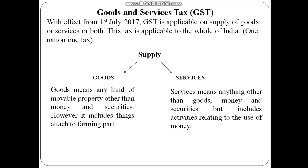Services means anything other than goods — things beyond goods. It does not include money and securities, but it includes activities relating to the use of money, like the profession of a teacher, doctor, or advocate, supply of electricity, water supply, services provided by restaurants, and services provided by hospitals. Goods include material cost, labor cost, and other overhead costs including profit. Services hardly include any material cost — they include labor cost and other overhead costs on which we have to pay GST.